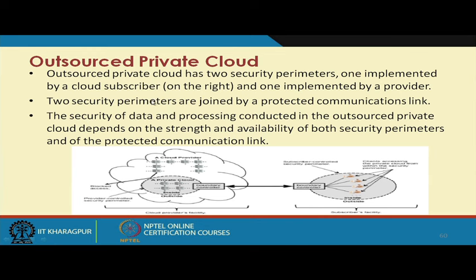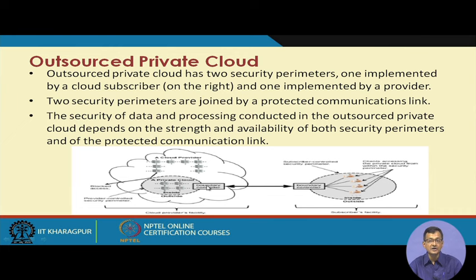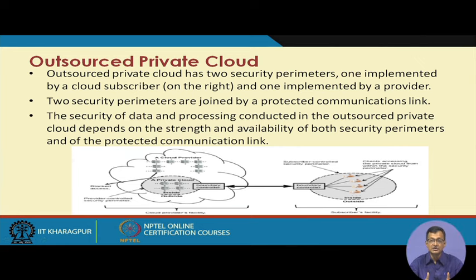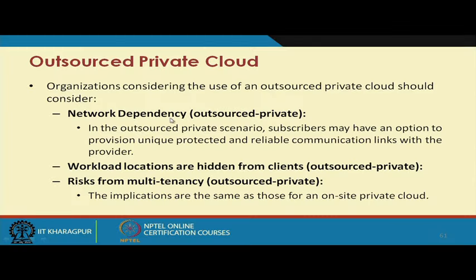Another variant is outsourcing the private cloud, where the organization does not handle maintaining and installing — it is outsourced. An outsourced private cloud has two security perimeters: one implemented by the cloud subscriber and one implemented by the provider. There is a channel connecting the subscriber to the outsourced private cloud at another premises, or it may be a subset of a cloud service provider. The security of data and processing conducted on the outsourced private cloud depends on the strength and availability of both security perimeters and the protected communication channel.